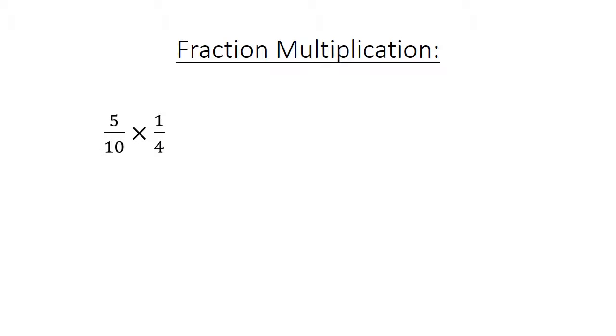Fraction multiplication. 5 over 10 times 1 over 4 equals 5 over 40. Simplify to 1 over 8.